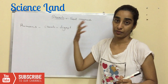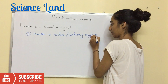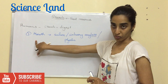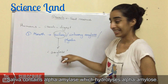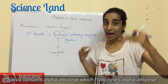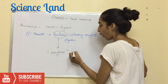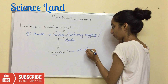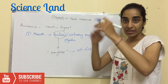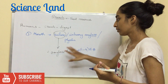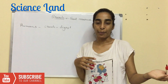Starch forms the main part of the human diet, so it is digested accordingly. The digestion of starch begins in the mouth, where saliva contains amylase — an enzyme which digests amylose. This enzyme digests all internal alpha 1-4 glycosidic bonds, except the outermost bonds and those next to branches.